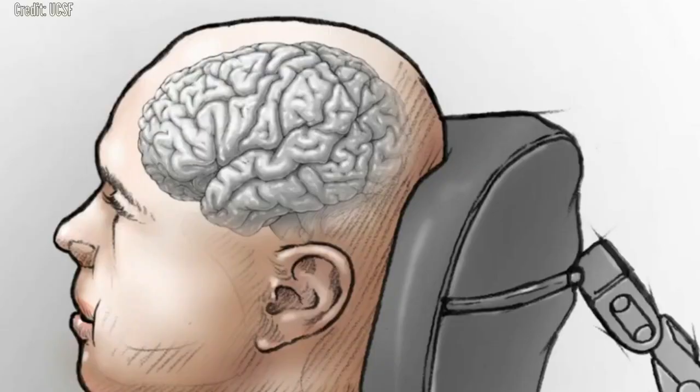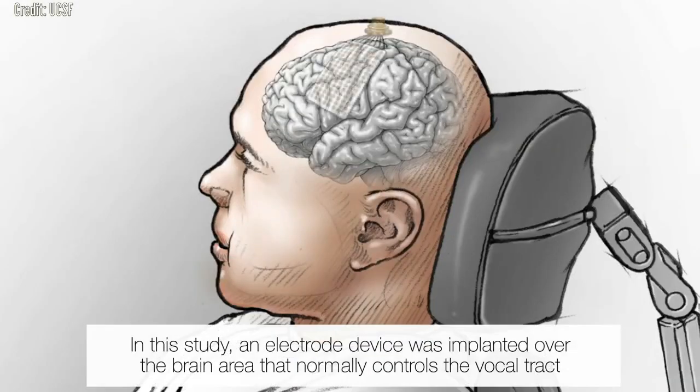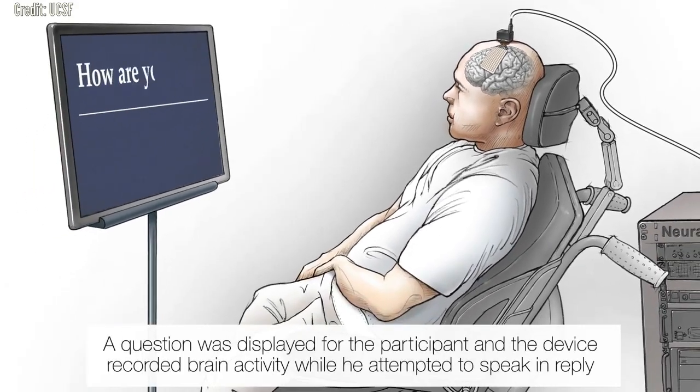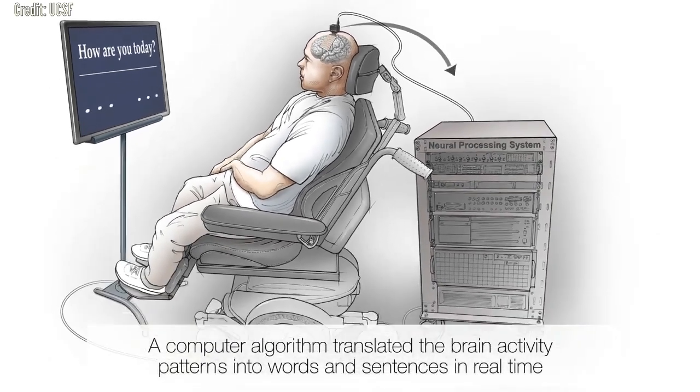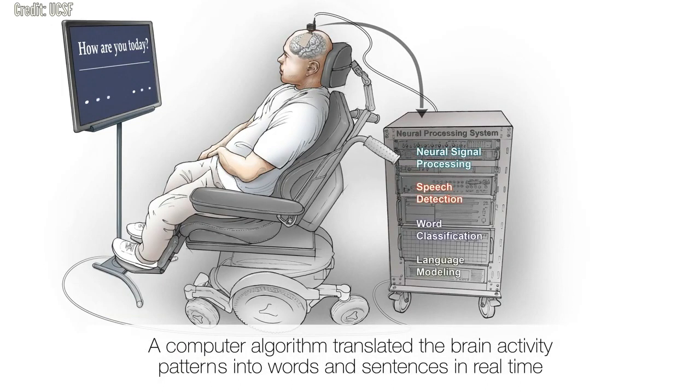His team is translating signals intended to control muscles of the vocal system for speaking words, rather than signals to move the arm or hand to enable typing. Chang said this approach taps into the natural and fluid aspects of speech and promises more rapid and organic communication.